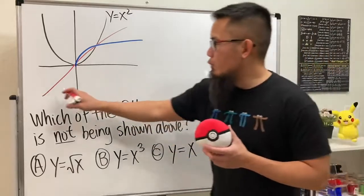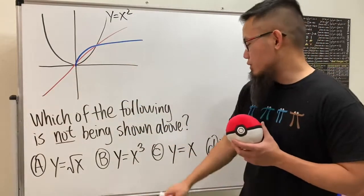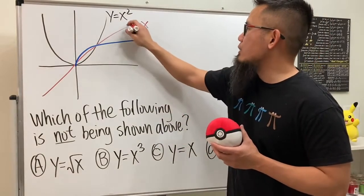Now, for the red one, this is just a line, and it's a diagonal line, and that's actually just y is equal to x. This is the linear function, y is equal to x.